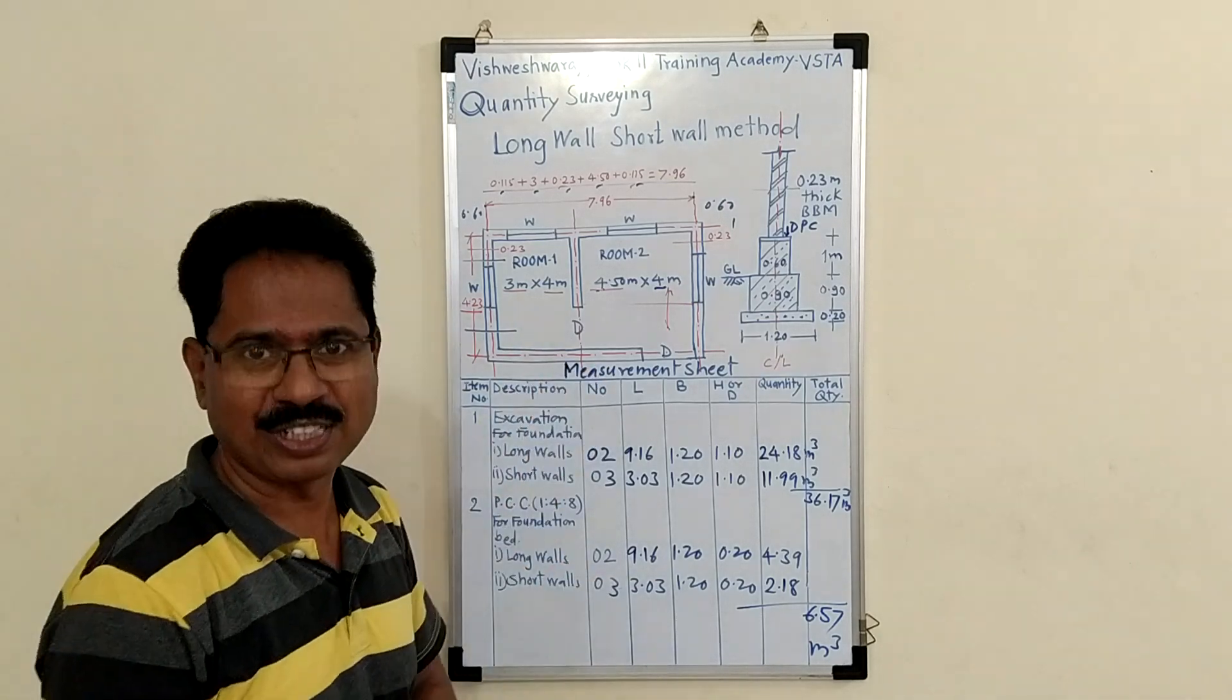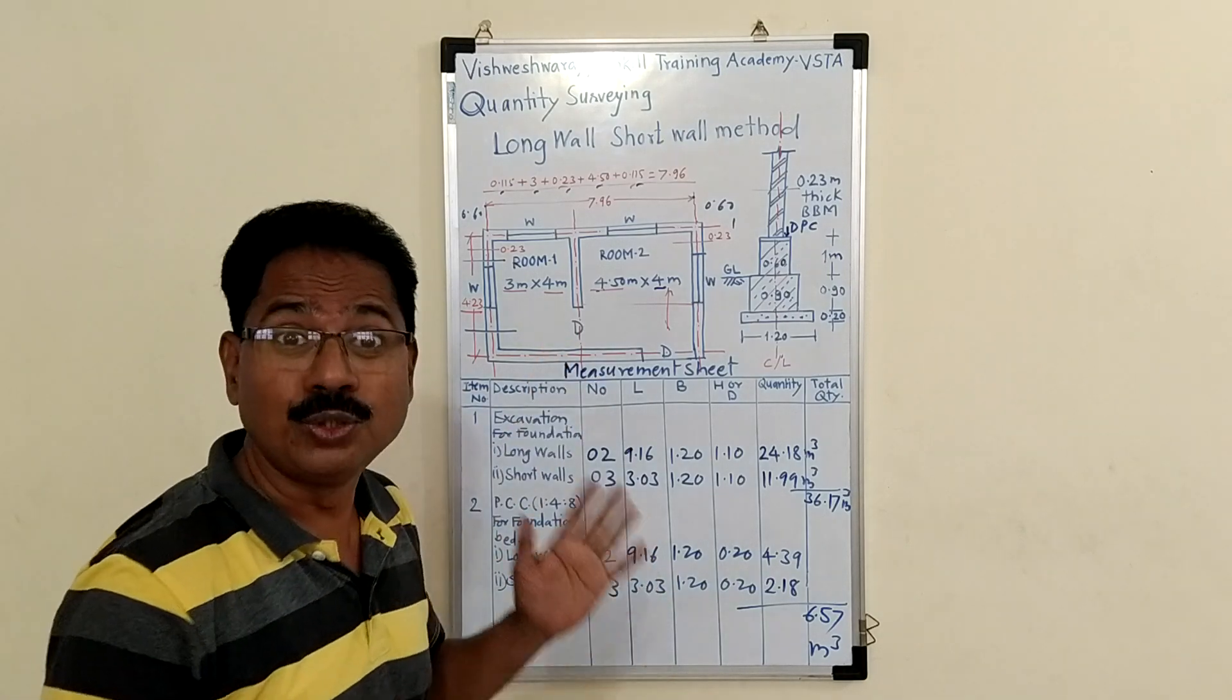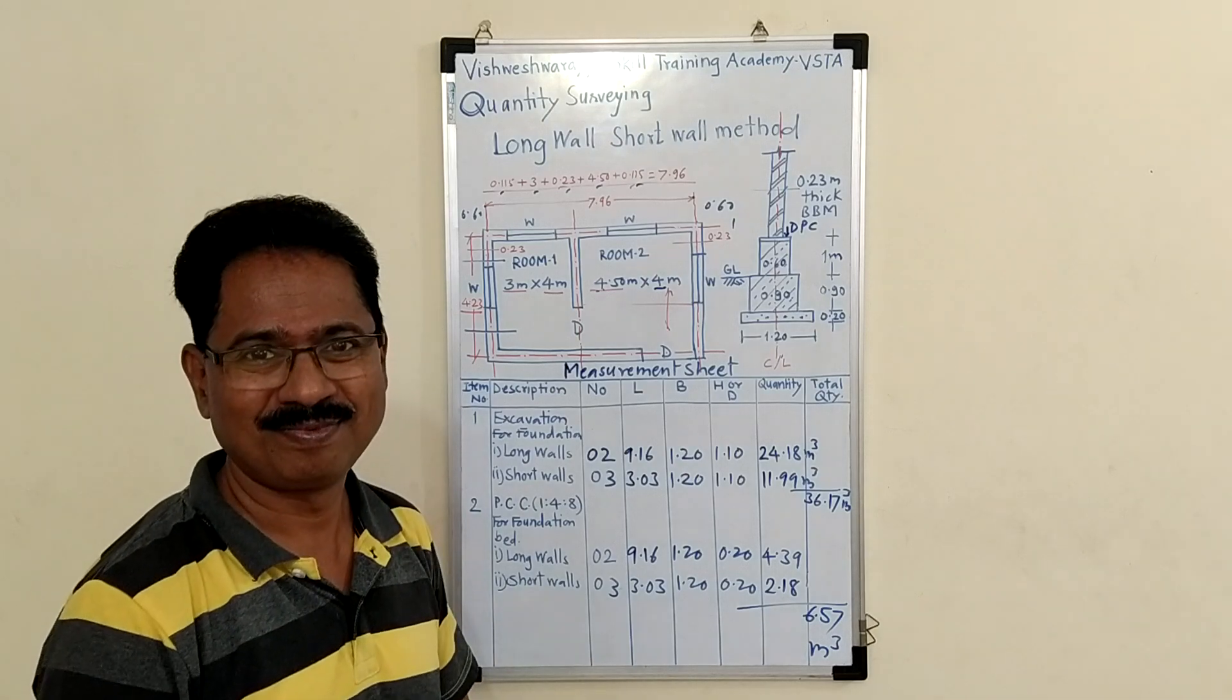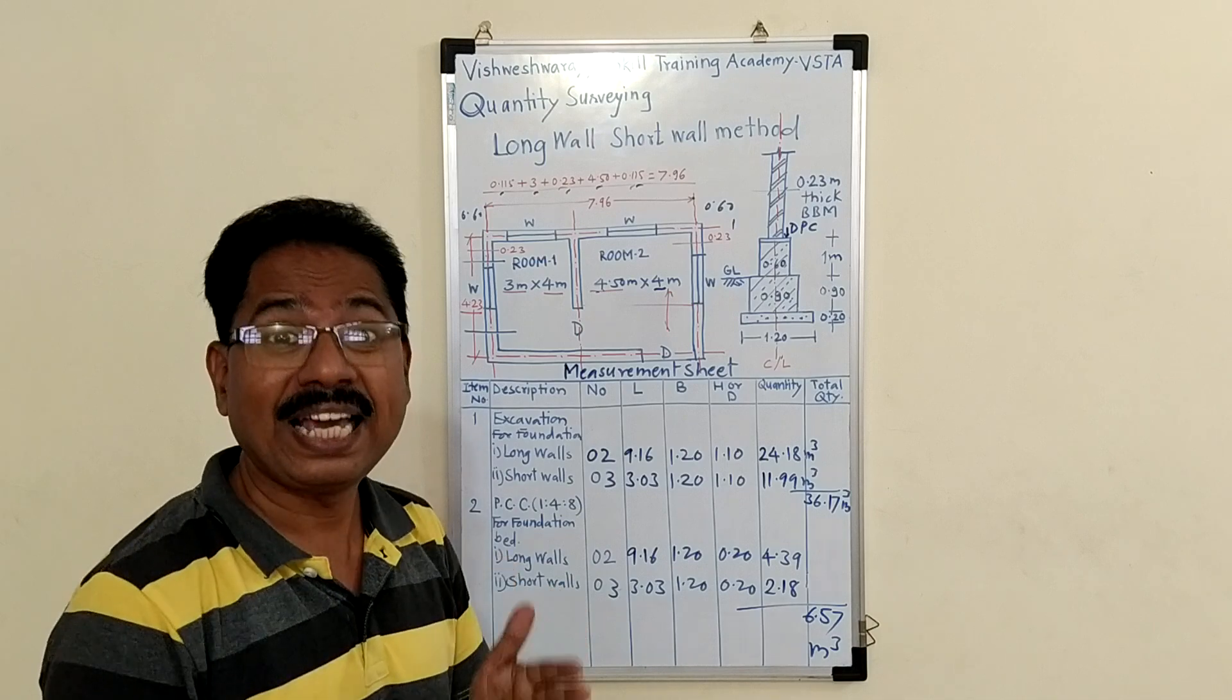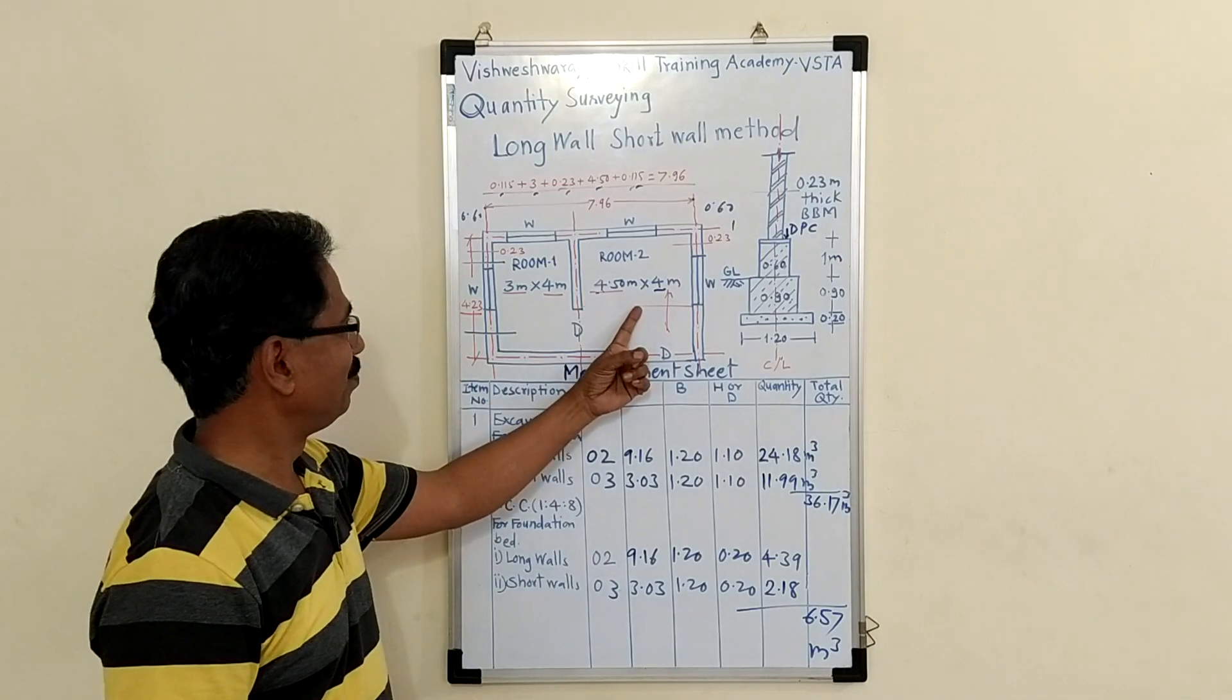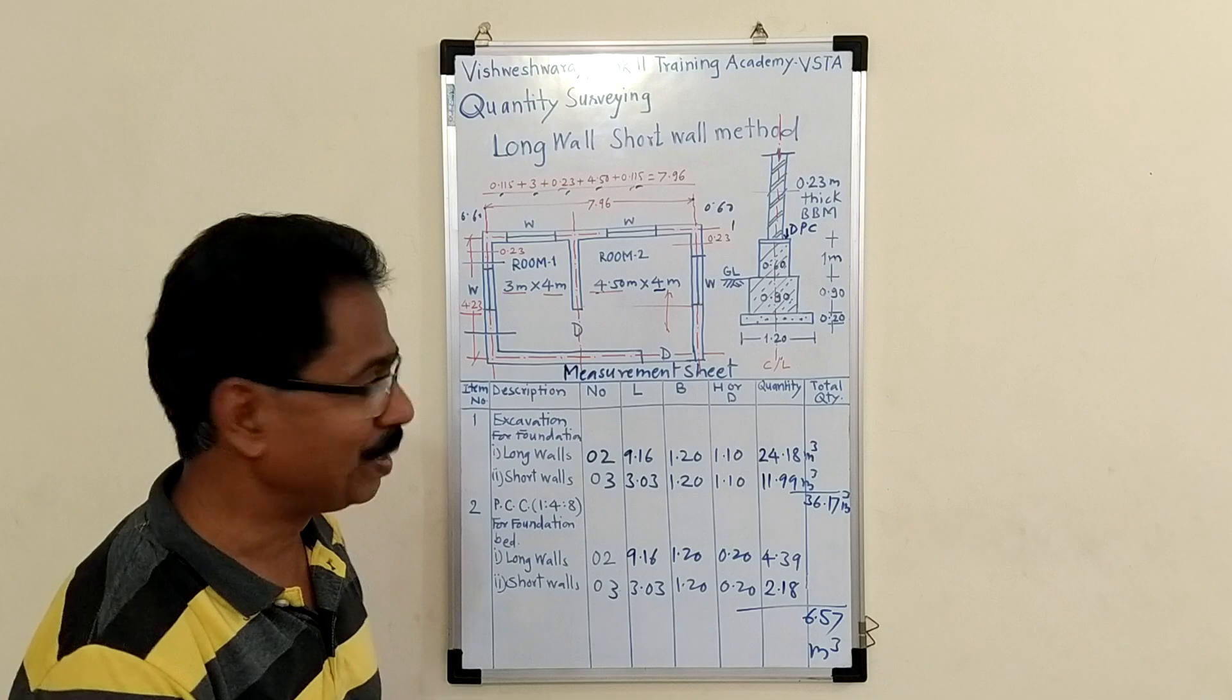So, how to calculate quantities of different items. First you read and observe the plan and section carefully because it is required to take exact dimensions from the drawing. Room 1, room 2. Size of room 1: 3 meter by 4 meter. Size of room 2: 4.5 meter by 4 meter.